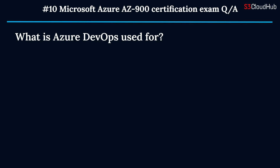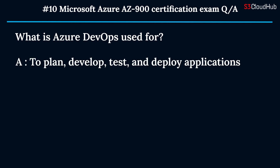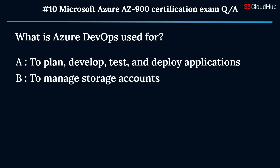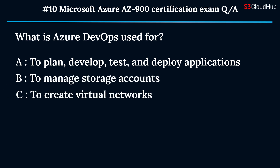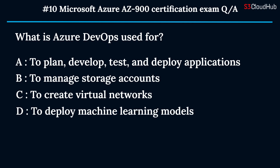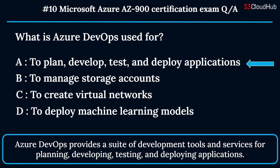The tenth question: what is Azure DevOps used for? Option A: to plan, develop, test, and deploy applications. Option B: to manage storage accounts. Option C: to create virtual networks. Option D: to deploy machine learning models. The correct answer is option A. Azure DevOps provides a suite of development tools and services for planning, developing, testing, and deploying applications.